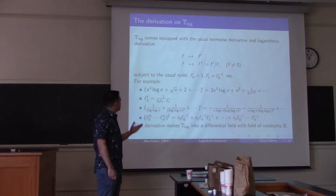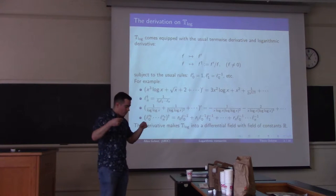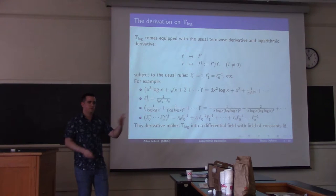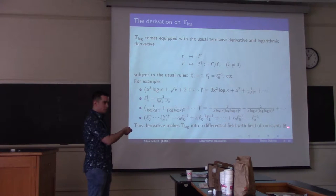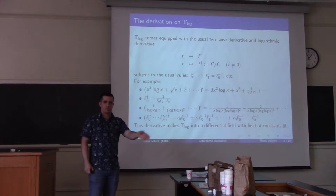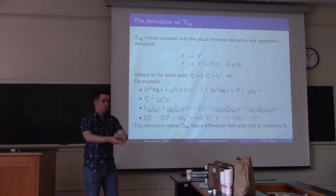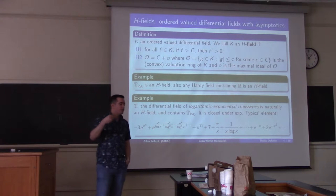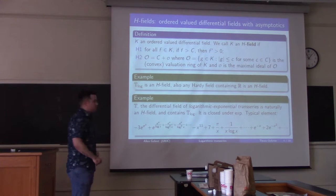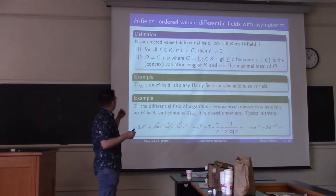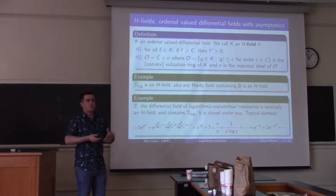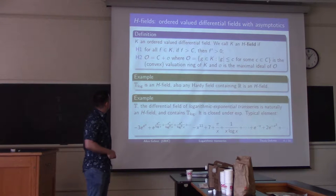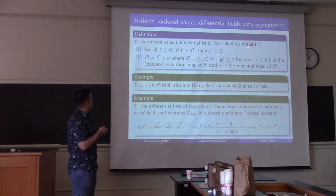The field T-log together with the derivative is called a differential field. All differential fields have a field of constants — take all elements whose derivative is zero. In this case, the field of constants is R, the real numbers, where we identify a real number with the constant series with no x's or log x's. T-log and T belong to a class of fields called H-fields, where H-fields are fields with a natural notion of asymptotics. I have a definition of H-field here: if K is an ordered valued differential field, then K is an H-field satisfying first this H1 condition: for all f in K, if f is greater than the constant field, then f' > 0.